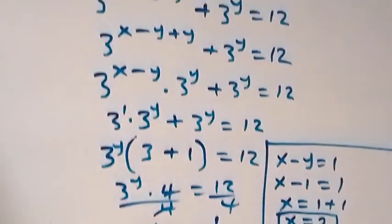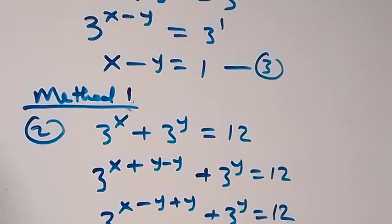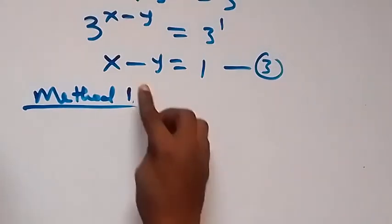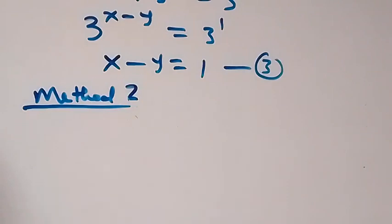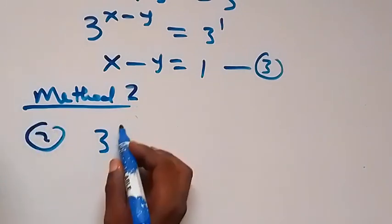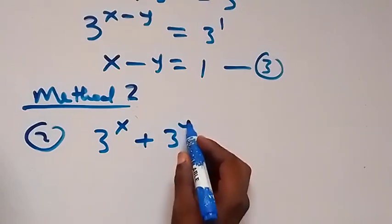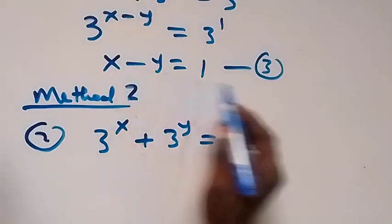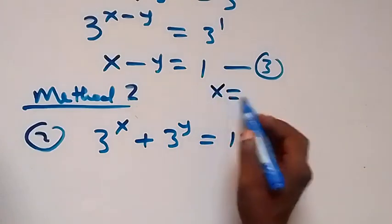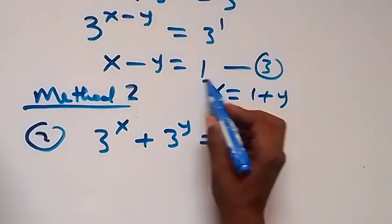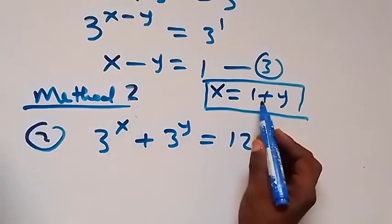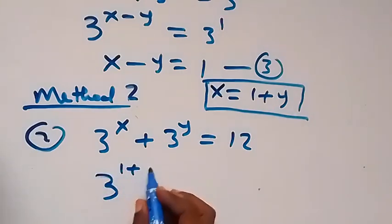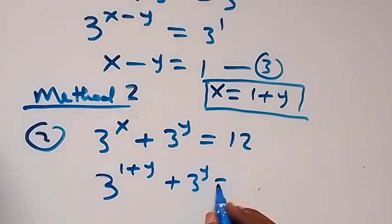Before we conclude, let's look at the second way of solving this — Method 2. We have equation 2 as 3 raised to power x plus 3 raised to power y equals 12. From equation 3, we can make x the subject, so x equals 1 plus y. Instead of writing x, we substitute 1 plus y, giving us 3 raised to power (1 plus y) plus 3 raised to power y equals 12.